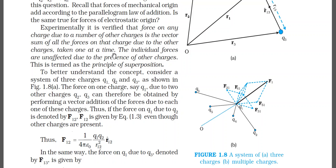This is experimentally verified — that for a system of N charges, the net force on any one charge equals the vector sum of the individual forces exerted by each of the remaining N-1 charges. To find the net force on Q1, calculate the force due to Q2 on Q1, then due to Q3, due to Q4, and so on, and add all these individual forces vectorially. This statement is called the principle of superposition.